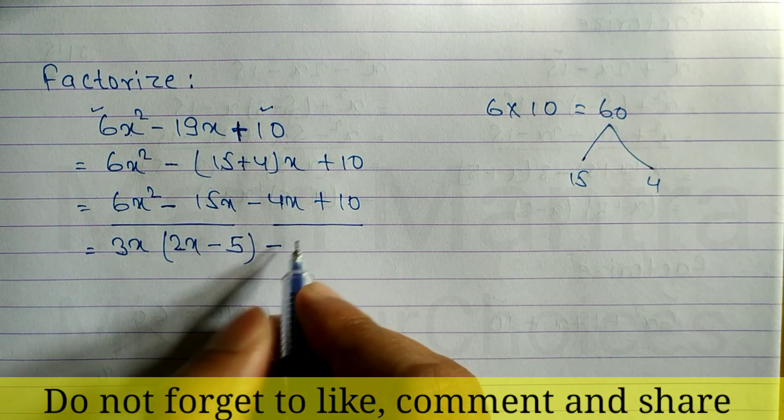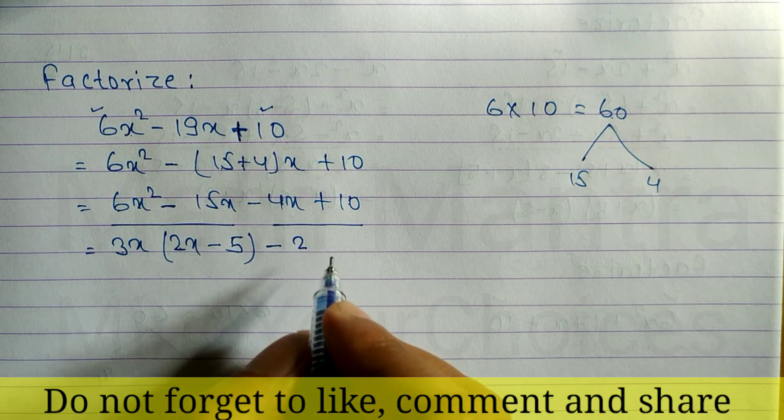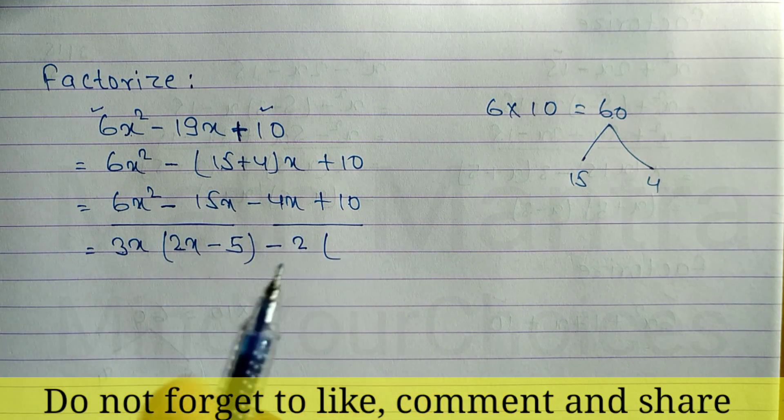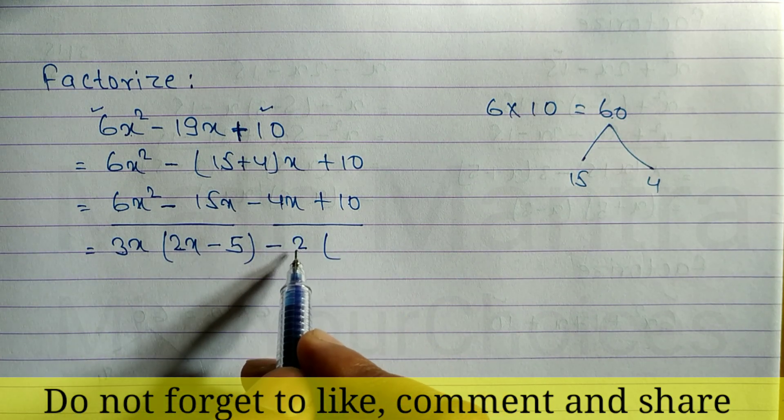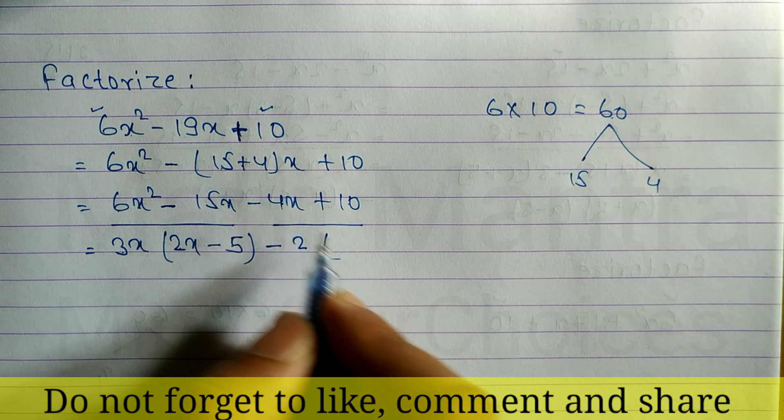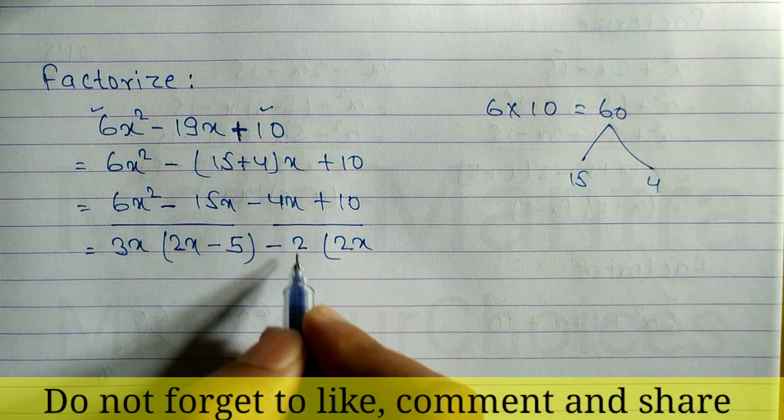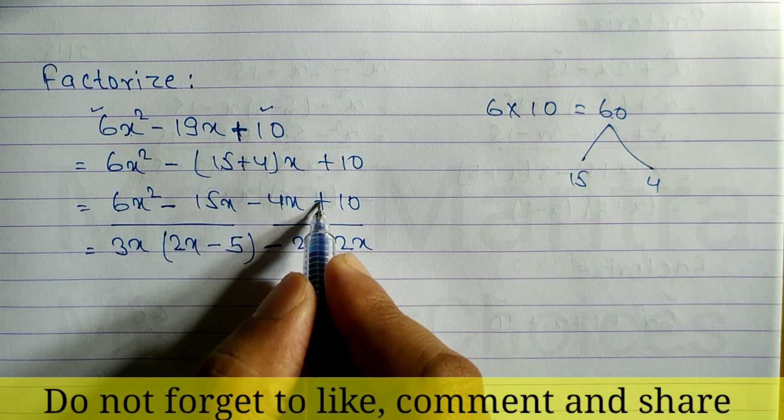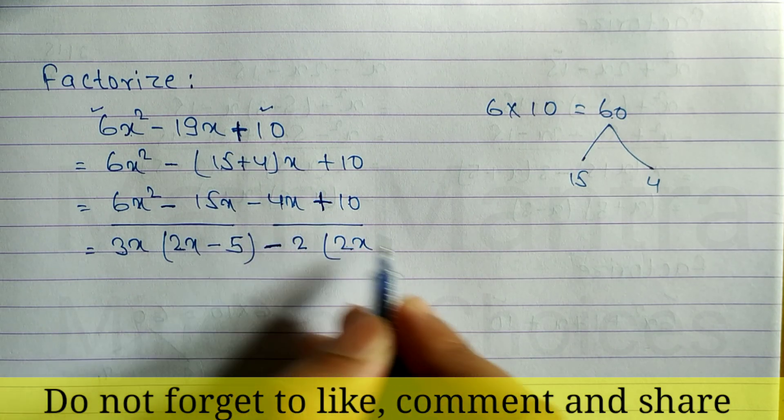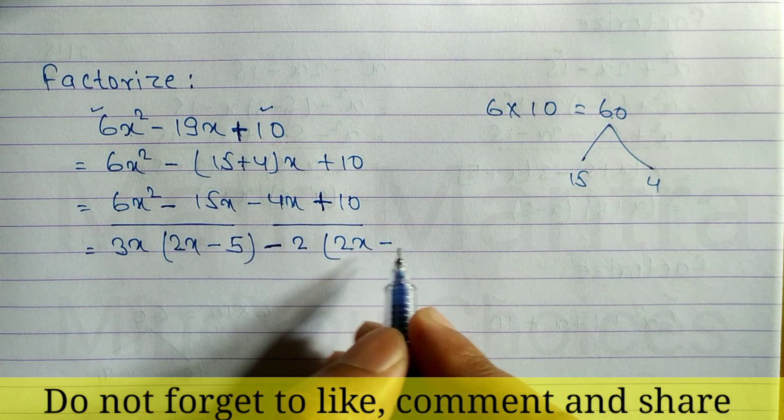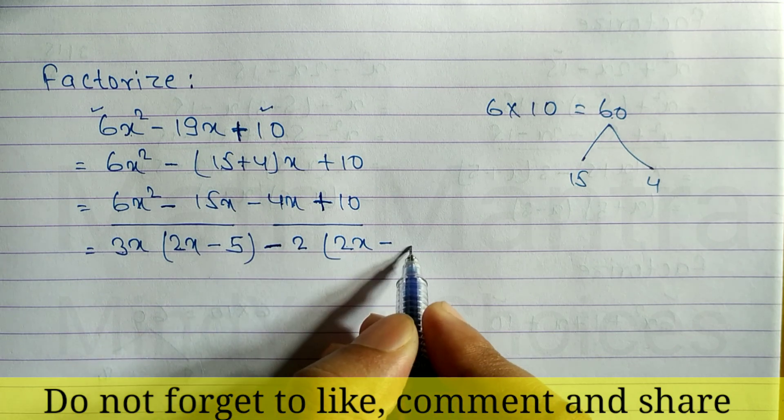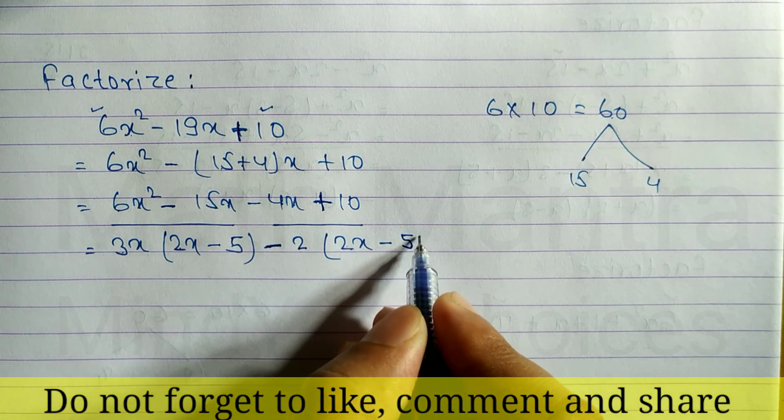From -4 and 10, the common factor is 2. After taking 2 common, what is remaining? 2 times 2 is 4, and x is here. When minus is common, we have to change the sign. If positive, we write negative. If negative, we write positive. Now, 2 times which number gives 10? 2 times 5 is 10. So write 5.